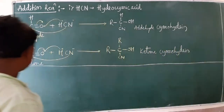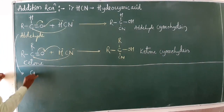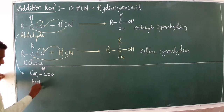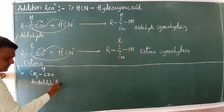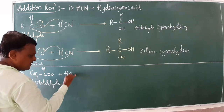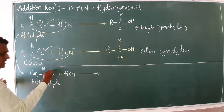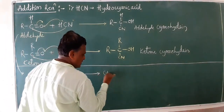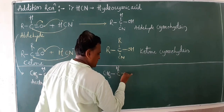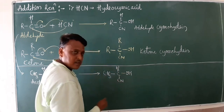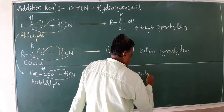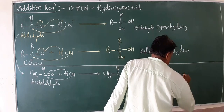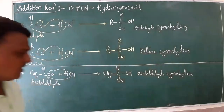For the first example using aldehyde: acetaldehyde is CH₃-CHO. When acetaldehyde reacts with HCN by direct addition, H and CN are both added, so the answer is CH₃-CH(OH)-CN. The name of this product is acetaldehyde cyanohydrin.